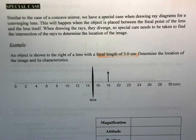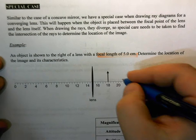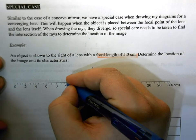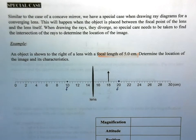We want to determine the location of the image and its characteristics. We haven't explicitly marked in the focal points, but we're told the focal length is five centimeters. We've got a ruler down here. It looks like the lens is at 15 centimeters, so we're going to have a focal point at 20 and our focal point on the other side at 10. So f and f, we just need those for reference.